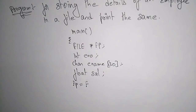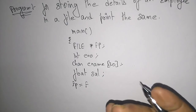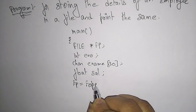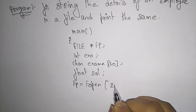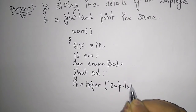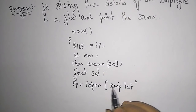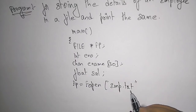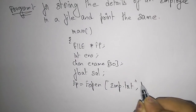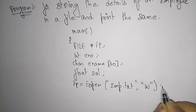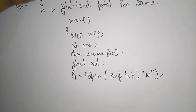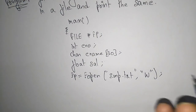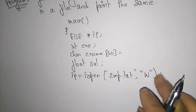For storing means you have to write the details into the file, so you have to open the file in write mode using fopen. The name of the text file I am creating is employee.txt. I open the file in write mode.